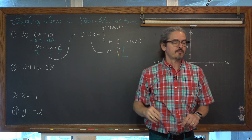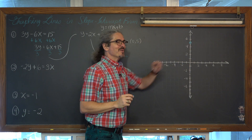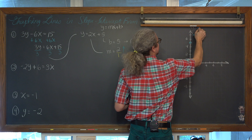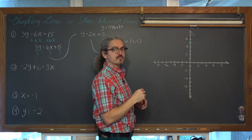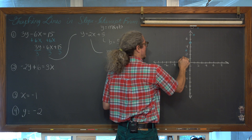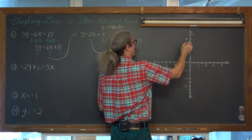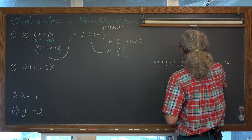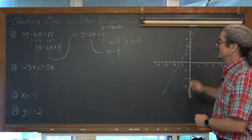I'm going to plot the y-intercept at 5 on the y-axis — that's my current location. The slope tells me to go up 2 units and over 1. I'll also verify by going in the opposite direction: down 2 and left 1. Going from left to right: up 2 over 1, up 2 over 1 — yes, that confirms the slope. That is the graph of our first problem.